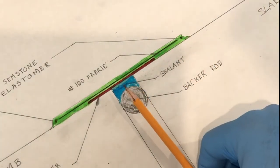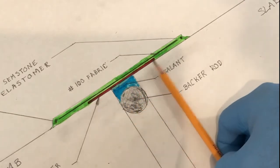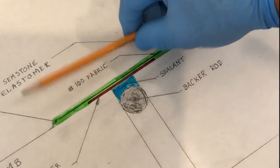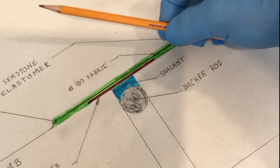I frequently get asked, why does Carboline recommend bond breaker tape in a construction joint detail? It's really simple.